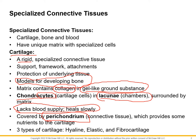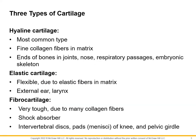There are three types: hyaline, elastic, and fibrocartilage. So hyaline cartilage, which is what you need to know for sure, is the most common type. I always say this: if you have a question about cartilage and you don't know the answer, guess hyaline. The odds are on your side because it is by far the most common.